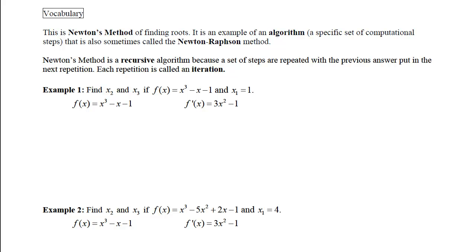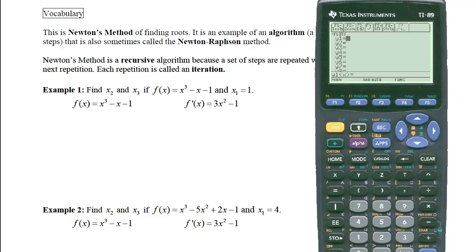For example 1 now, we want to find x sub 2 and x sub 3 if the function is given to us and our initial guess is x sub 1 equals 1. To do this, we are going to go to our calculators, and in our calculators, we're going to put the original function x cubed minus x minus 1 into y1, and in y2, we're going to put the derivative of y1, which is 3x squared minus 1. Then on the home screen, we are going to need our initial guess, which is 1.